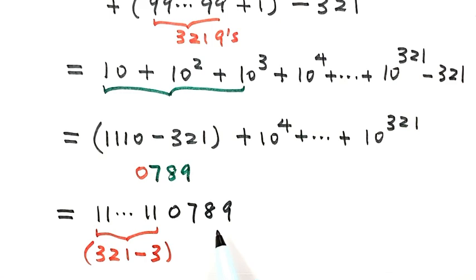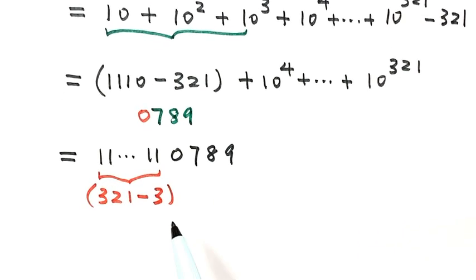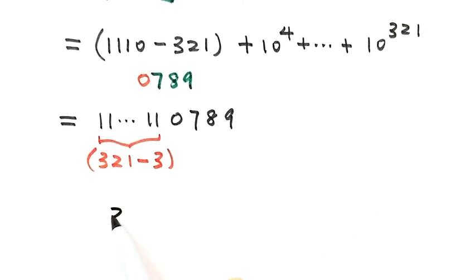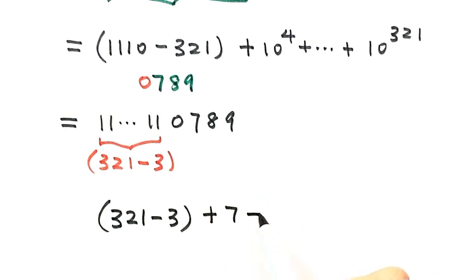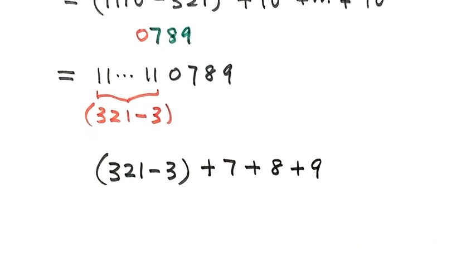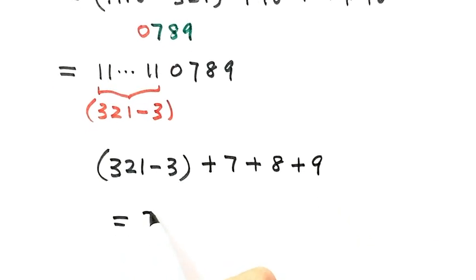What is the sum of the digits of n? We have 321 minus 3 ones, plus the digits 7, 8, and 9. That equals 318 times 1, plus 7 plus 8 plus 9, which equals 318 plus 24, equals 342. So 342 is the sum of digits of n.